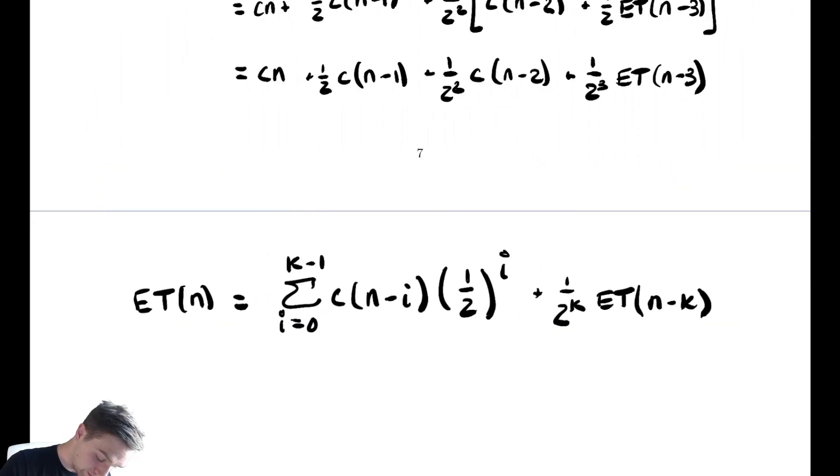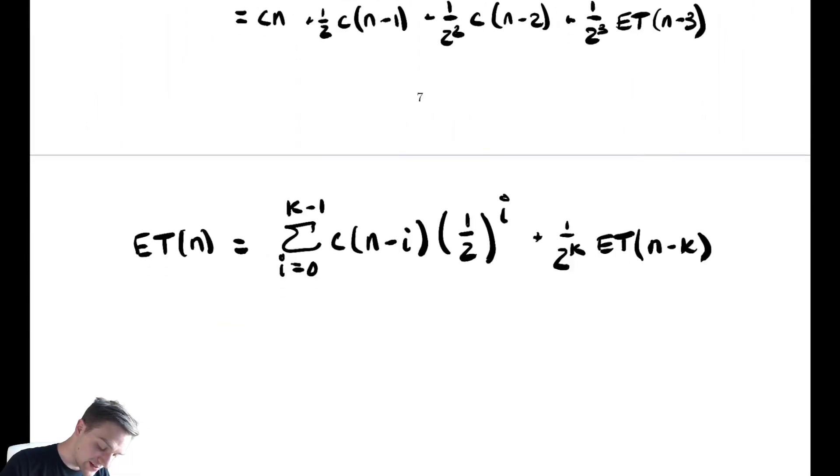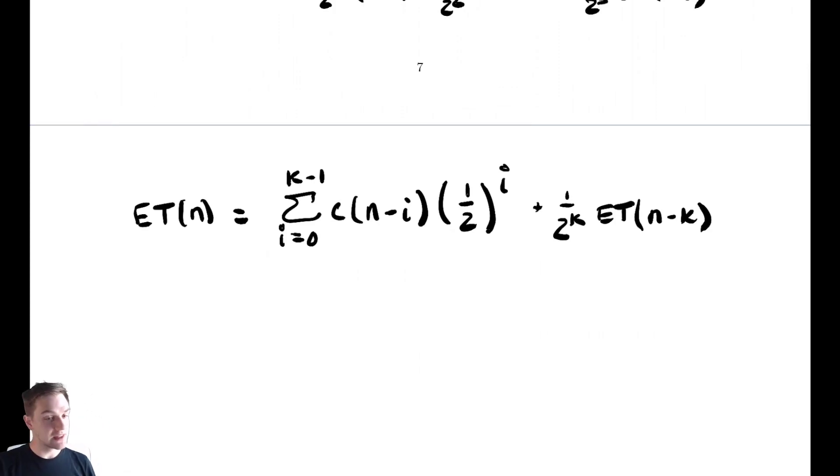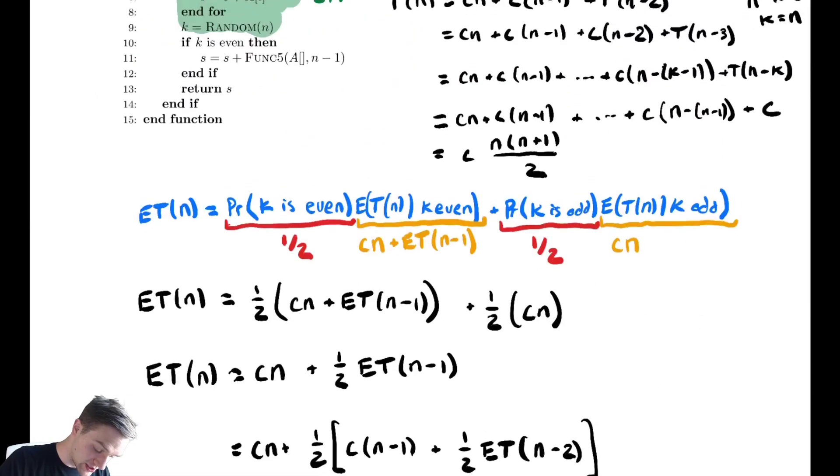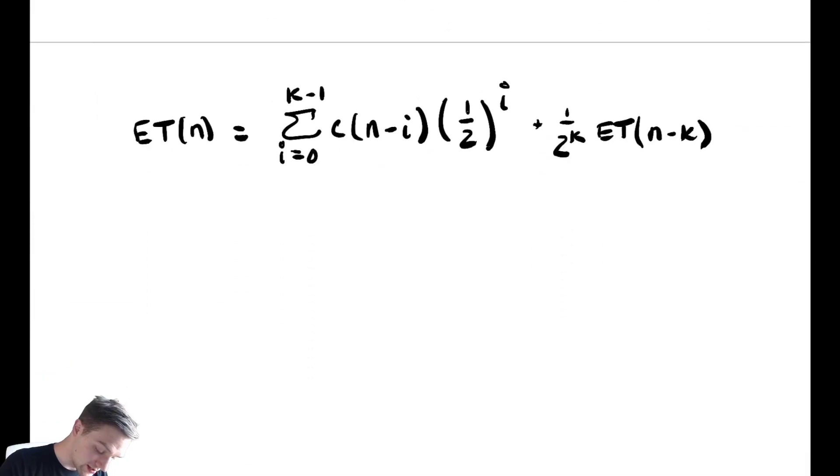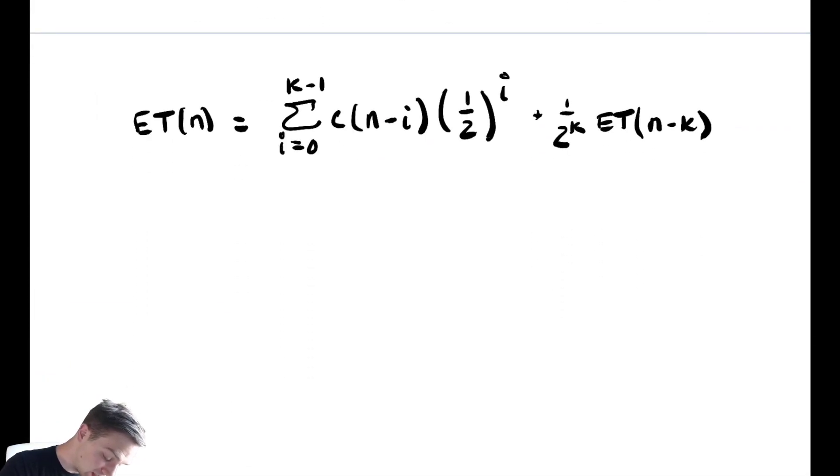Let's move this down. Now we have a summation to analyze. This looks really messy compared to what we've seen in the past, but let's try and deal with it. What's our base case? Well, let's scroll up and check. Our base case was n equals 1, so we need to choose k so that n-k is equal to 1, which is k equals n-1.